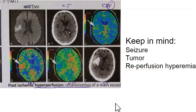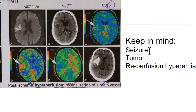It's not always easy — there are other things to keep in mind that can simulate infarcts. You have to look at the clinical history and the CT and know that you're dealing with a potentially acute infarct. Otherwise, you can get confused by seizures, which on CT perfusion can look just like acute infarcts, and tumors can also have a variety of appearances.